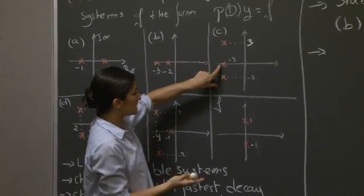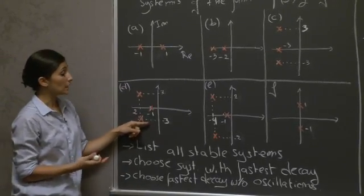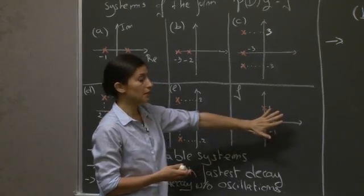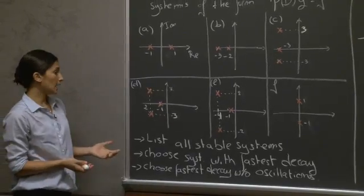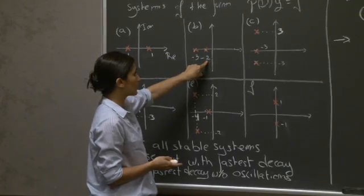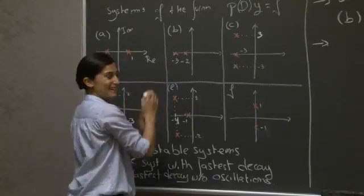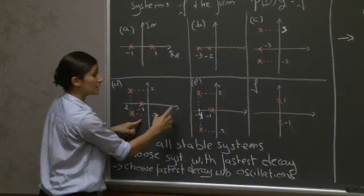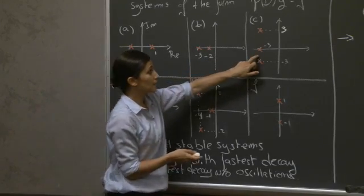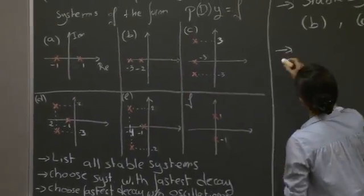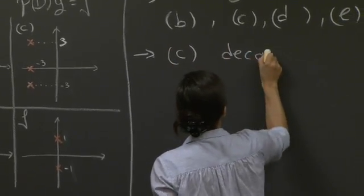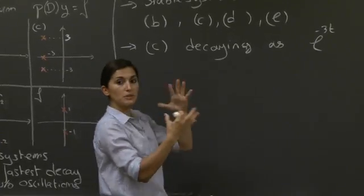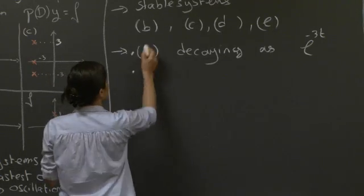For the stable systems: system C has an e^(−3t) decay type, system B has e^(−2t), system D has e^(−t), and system E has approximately e^(−0.5t). To find the fastest decay, we select the system whose rightmost pole is most negative. The pole at minus 3 in system C gives the fastest decay. So system C decays as e^(−3t) — the dominant term describing behavior at large t.